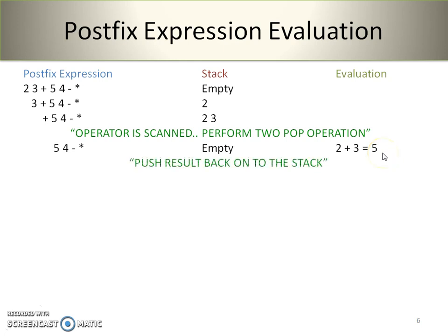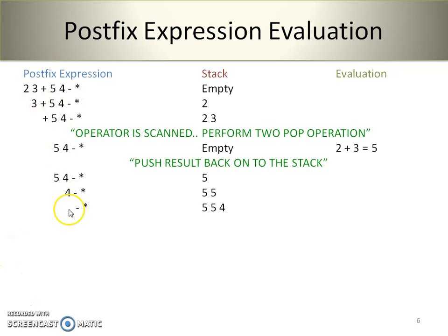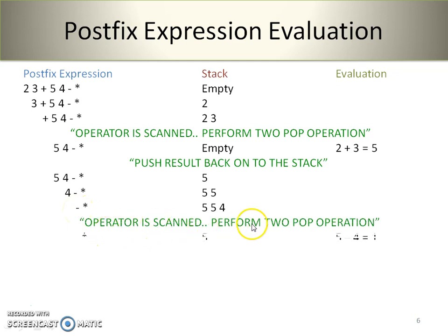We push the result 5 back onto the stack. The next character is 5, which is an operand — push onto the stack. Next is 4 — push onto the stack again. The next scanned character is the minus operator. We perform two consecutive pop operations: 4 becomes the second operand and 5 becomes the first operand. The minus operation is performed: 5 minus 4, and the result is 1. We push result 1 back onto the stack.